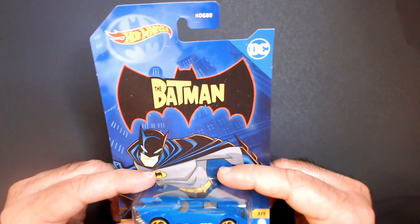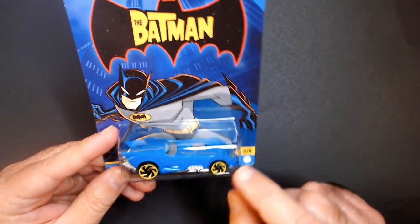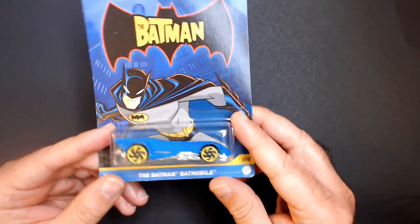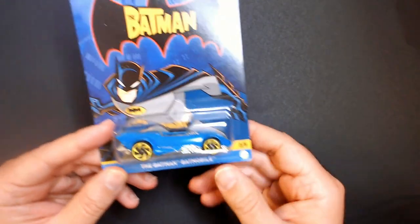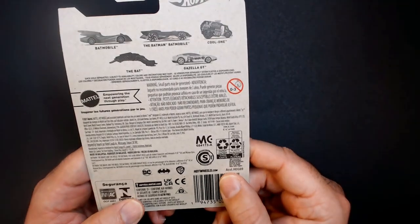Welcome back to RRR. We have the Batman Batmobile here in blue with some silver, some yellow accents on the wheels. The Batman Batmobile from the same series I picked up at the Dollar Tree a little while ago.